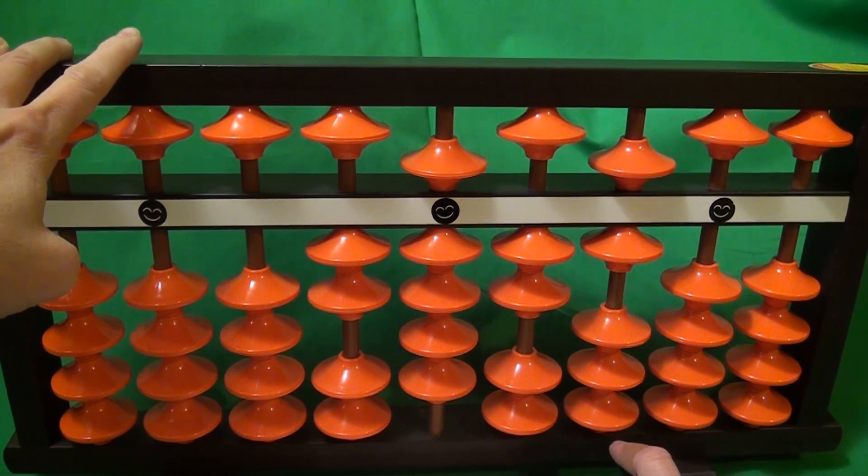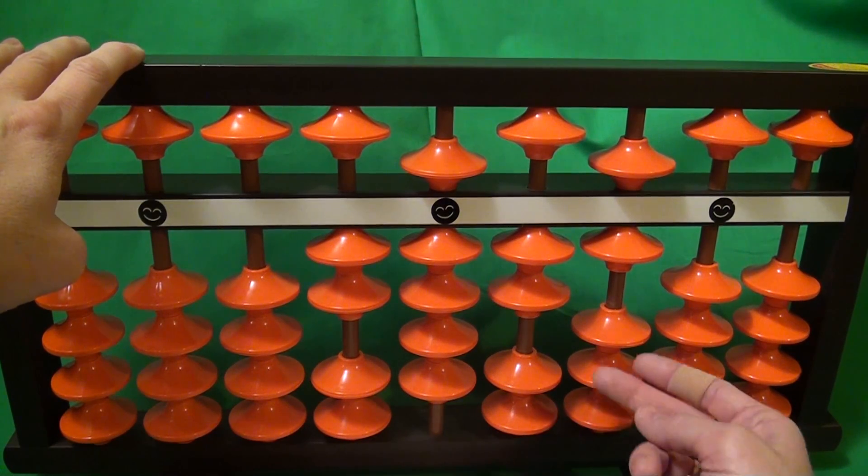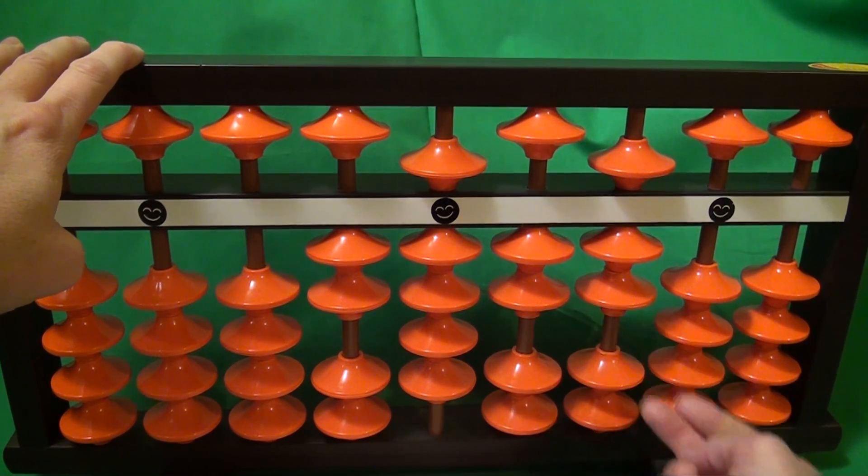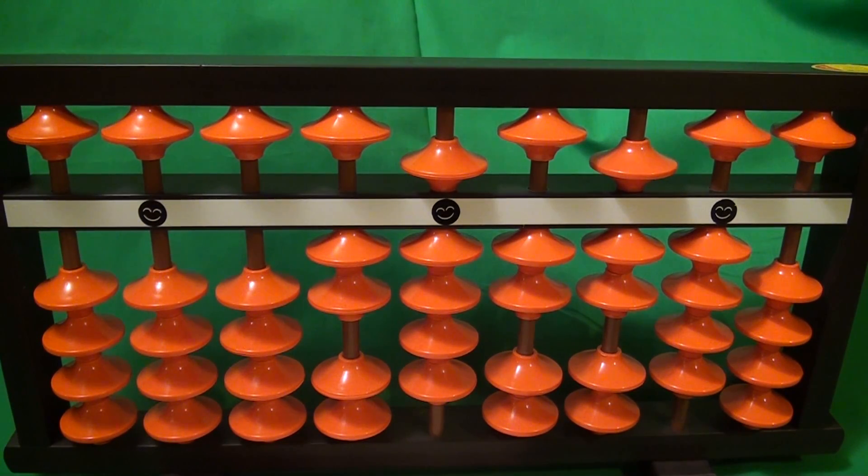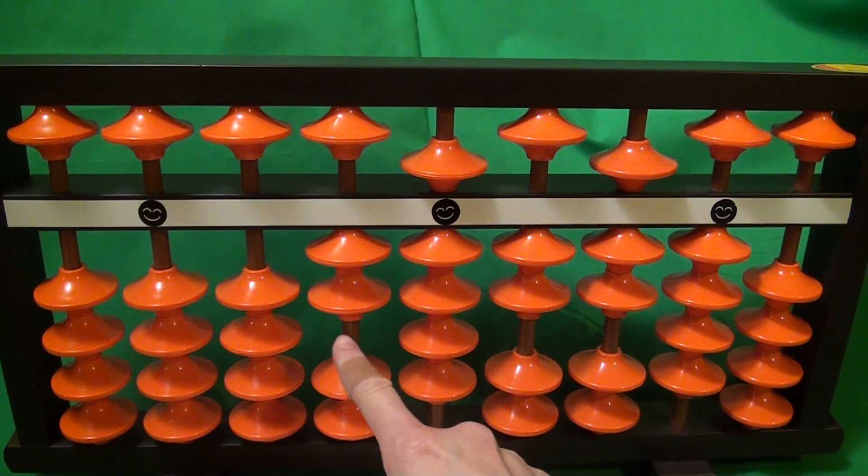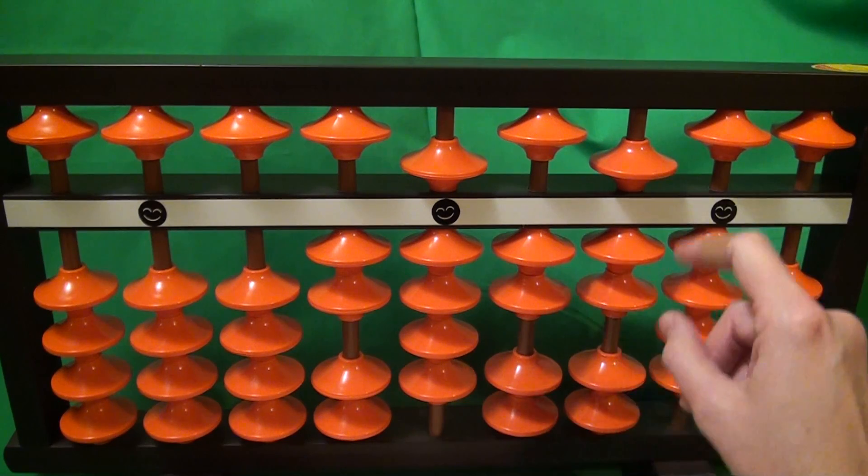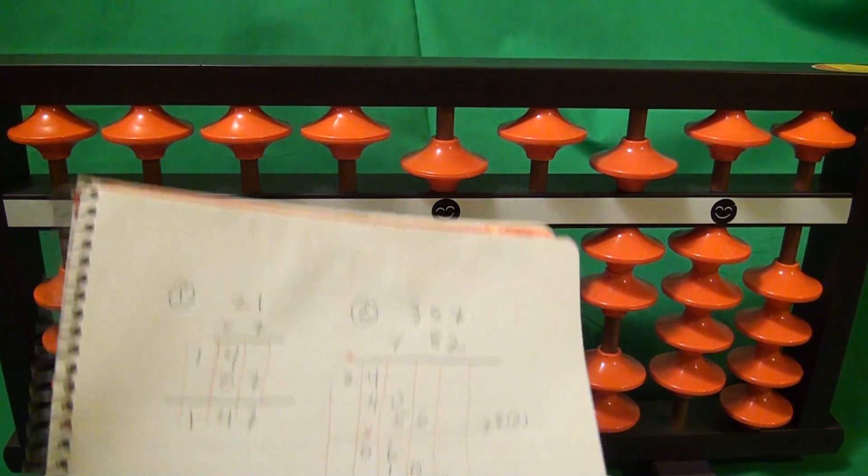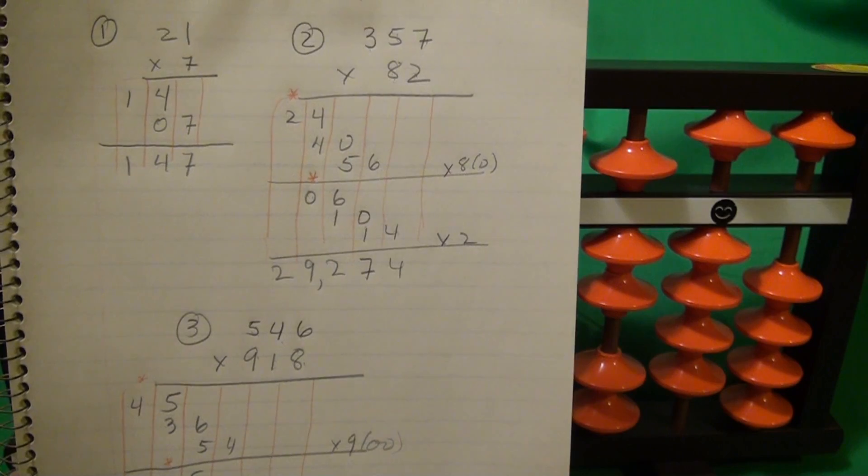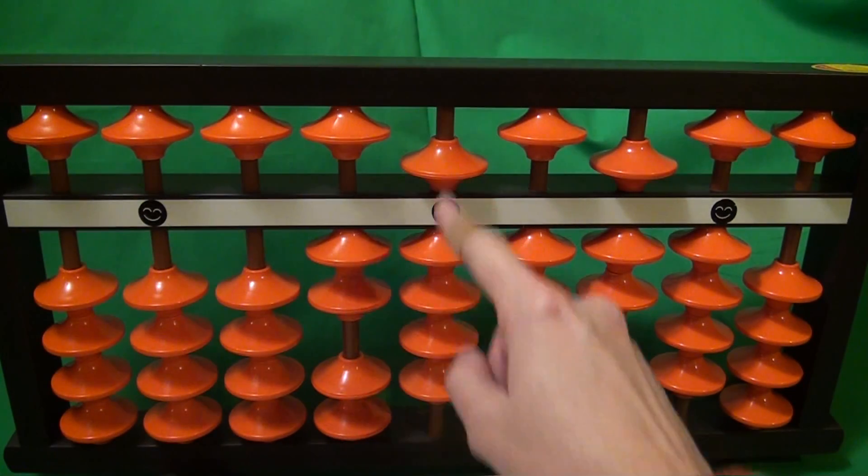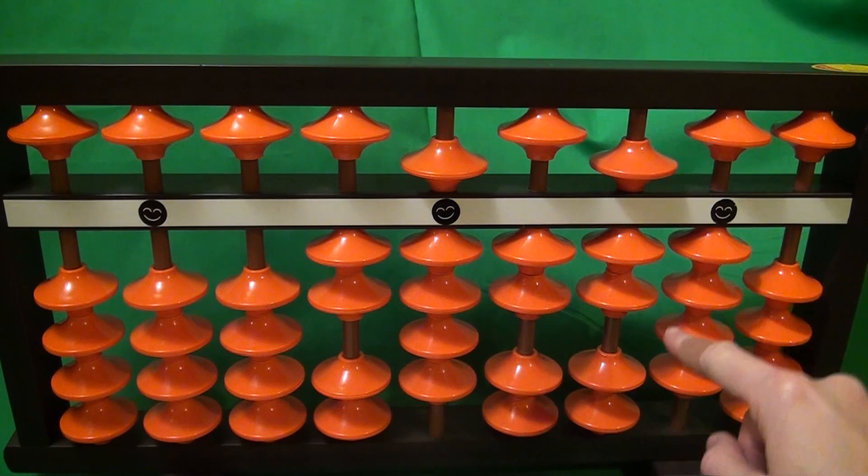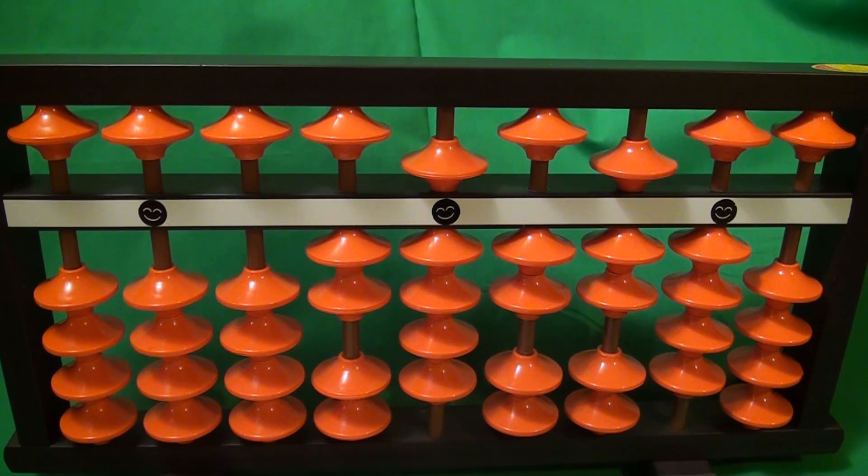And then the last one, 7 times 2 is 14. So 1 and 4. And we've added the 14. So now we've got the answer 29274, which is what we got before. 29274. So that's example 2. A little bit more complicated.